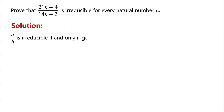We know that a fraction a over b is irreducible if and only if the greatest common divisor of a and b is 1, or negative 1 when negative numbers are considered.